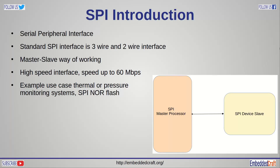SPI is Serial Peripheral Interface Protocol. SPI interface involves 3 or 2 wires; the 3-wire interface is faster than the 2-wire interface. SPI is a master-slave configuration where the master device starts communication and provides the clock to the slave device. Data is transferred on each clock and can travel in both directions — from master to slave and slave to master. SPI device speed can be up to 60 megabits per second.